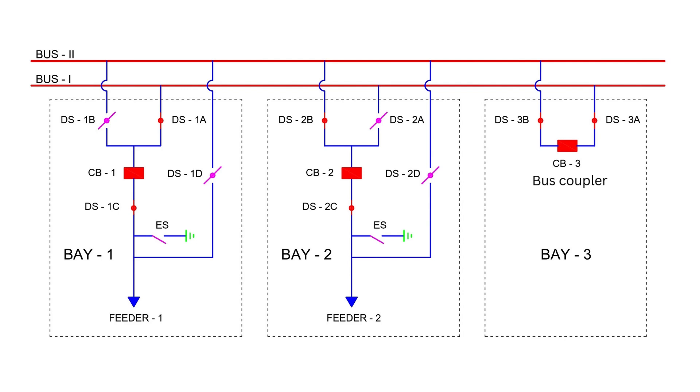The transfer isolator plays a critical role, especially during maintenance. Suppose feeder 1 is connected to bus 1, and we need to perform maintenance on its circuit breaker, CB1. Instead of shutting down feeder 1, we can transfer it to bus 2.